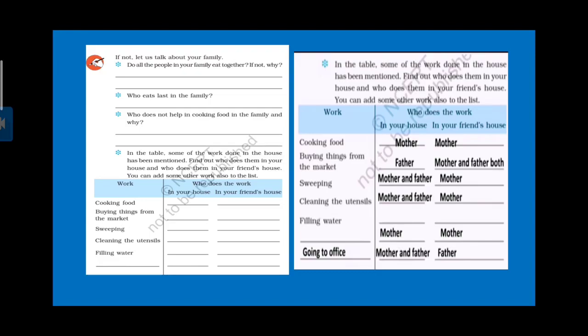Who does the work? Cooking food - mother. Buy things from the market - father and friend, father and mother. Sweeping - mother and father. Cleaning the utensils - mother and father. Filling water - mother and friend. Going to office - mother and father and friend, only father.